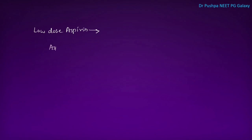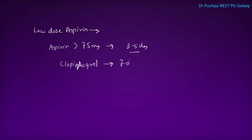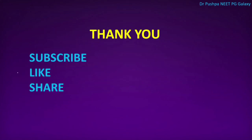Aspirin at a dose more than 75 mg must be stopped 3 to 5 days prior to surgery. Clopidogrel has to be stopped 7 days before surgery. Sildenafil must be stopped 24 hours prior to surgery. Statins and steroids can be continued. NSAIDs must be stopped 2 days prior to surgery. Please click like, share this video, and subscribe for more rapid series. Thank you.